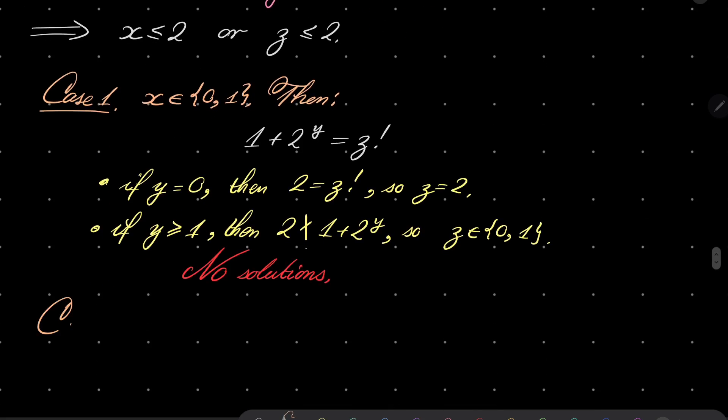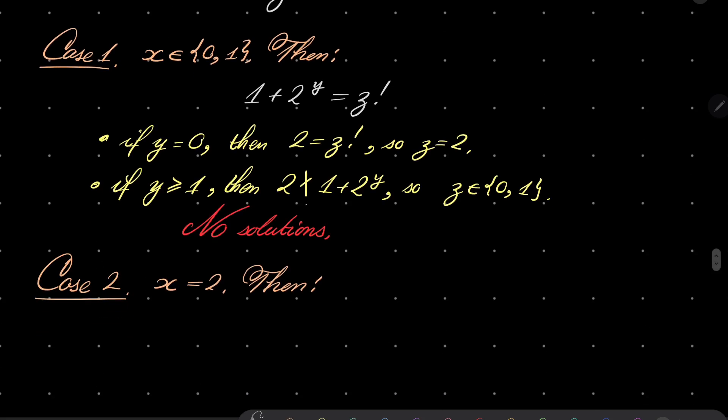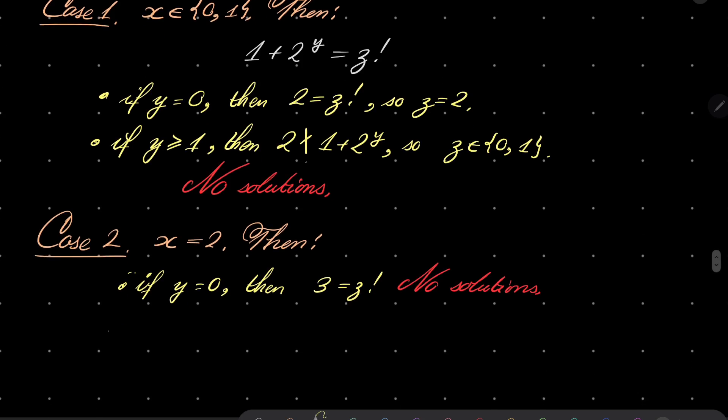No solutions in this case. Alright. Case number 2, when x is 2. But then? Then I will consider these cases, where if y equals 0, then we have this equation. If y equals 0, we have 3 equals z factorial. Of course, no solutions. If y equals 1, then we have 4 equals z factorial. Again, no solutions.